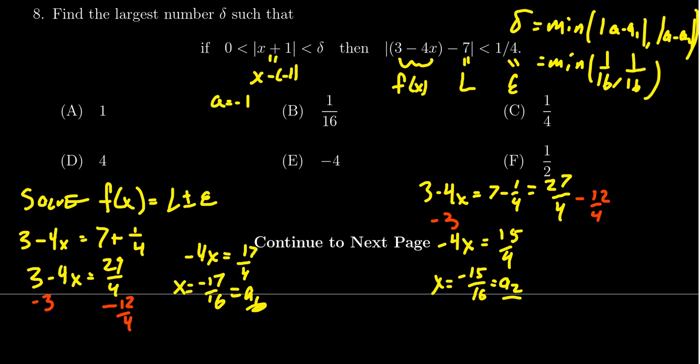We're taking absolute values, so these are going to be positive. They're actually both the same, and so we end up with 1/16, and that's going to be our delta value, which makes the correct answer B.